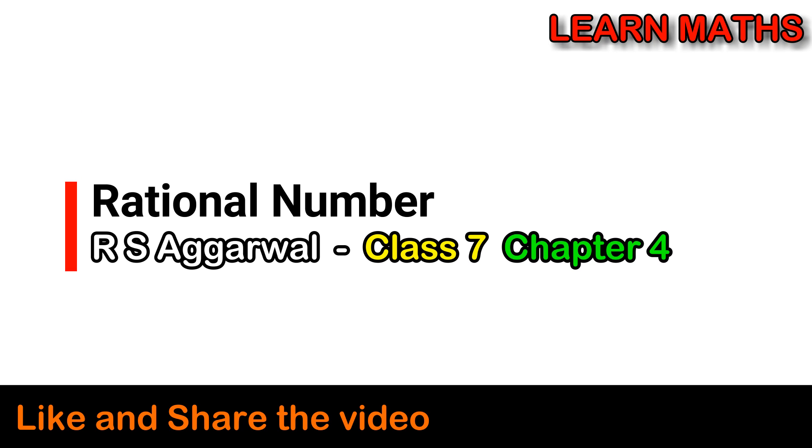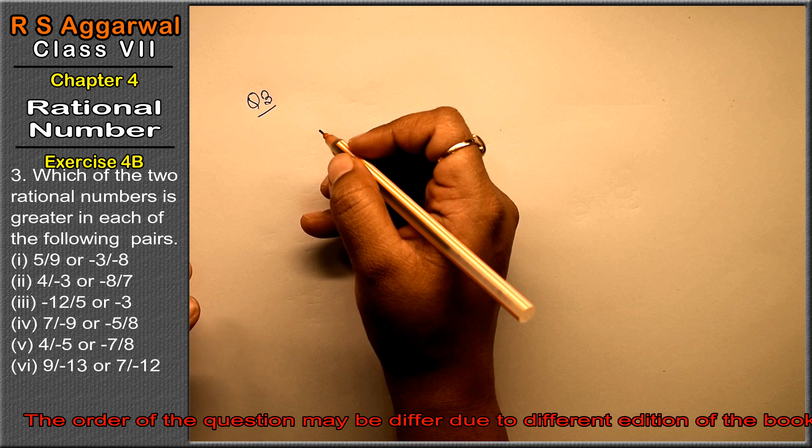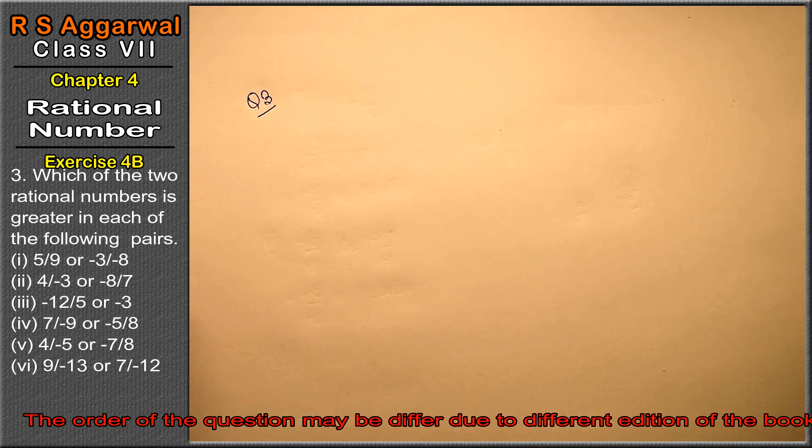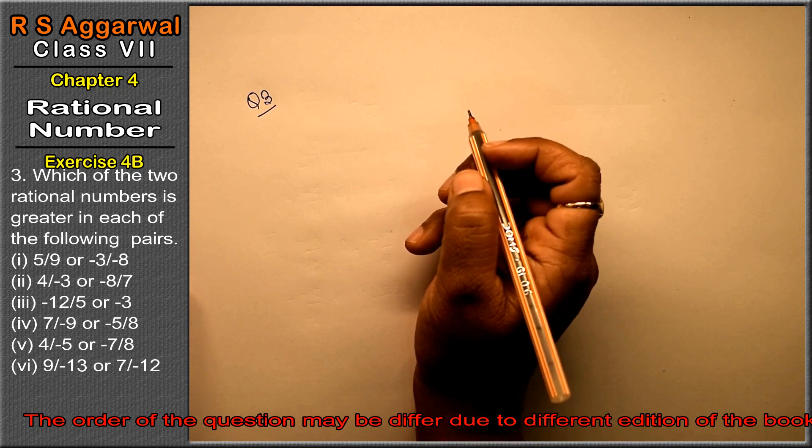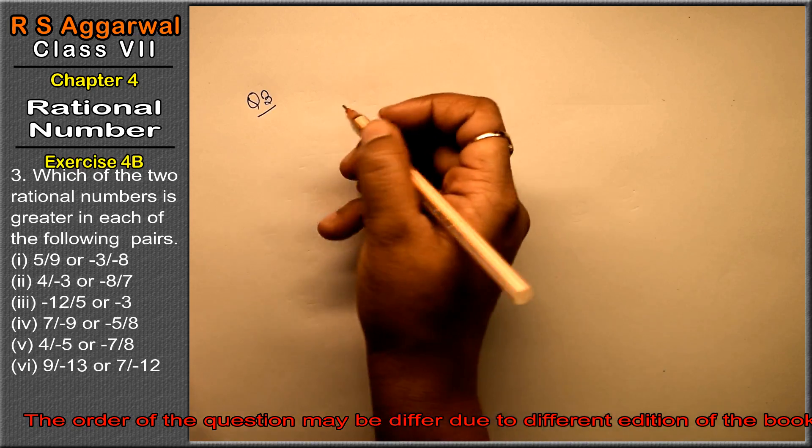Let's do question number 3 of exercise 4B on rational numbers. The question asks: which of the following two rational numbers is greater in each of the following pairs?